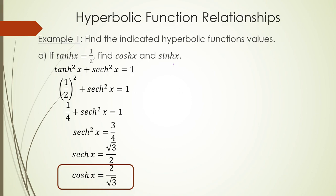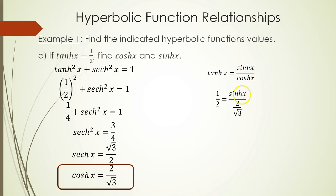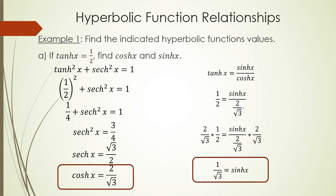To find hyperbolic sine, we use the identity: hyperbolic tangent equals hyperbolic sine over hyperbolic cosine. So 1/2 equals hyperbolic sine over (2 over the square root of 3). Since you're dividing by 2 over the square root of 3, you undo this by multiplying both sides by 2 over the square root of 3. This leaves us with 1 over the square root of 3 as hyperbolic sine of x.